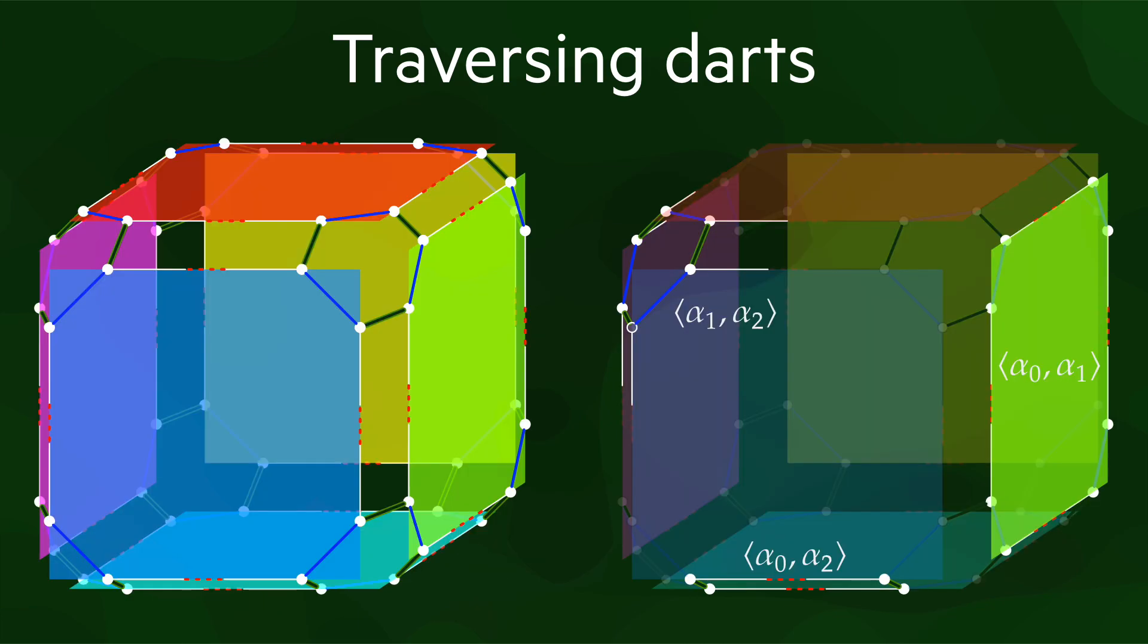Here we have another example with a polyhedron, which we can use to introduce the concept of orbits. Given a starting dart, an orbit gives us all the darts that are accessible from it, while following only certain involutions and permutations.